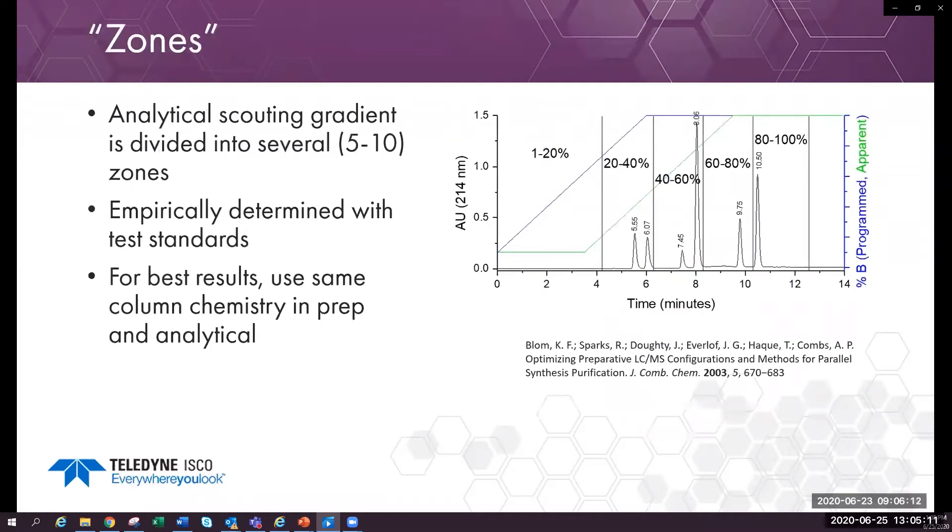Some of you may have a chart like this in your lab. Each zone in this chart represents a different method on the preparative LC system. This is easy to run once it is set up, but the gradient isn't optimized for any particular compound.